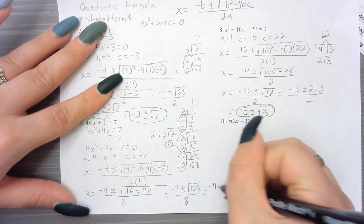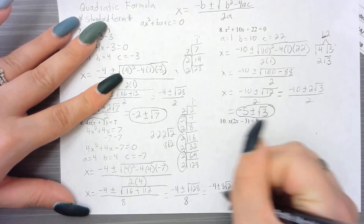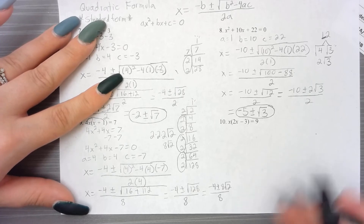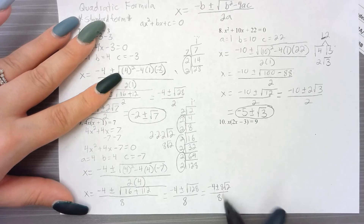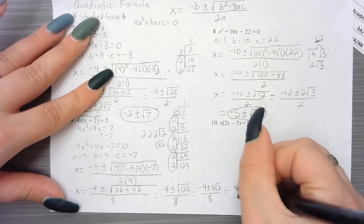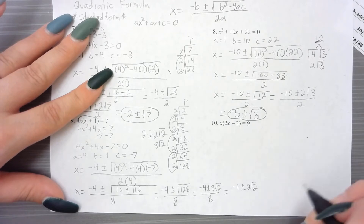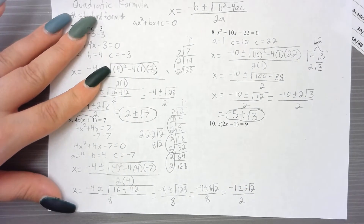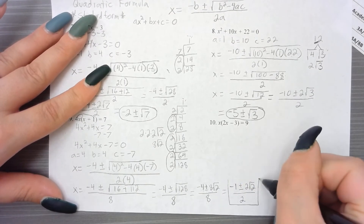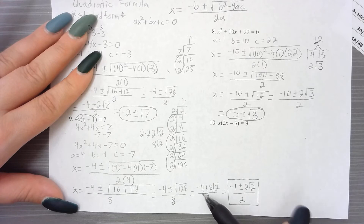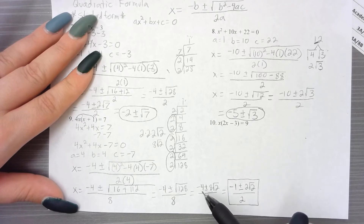So we have negative 4 plus or minus 8 square root 2, divided by 8. All of these are divisible by 4. So we divide: negative 4 divided by 4 is negative 1, 8 divided by 4 is 2, and 8 divided by 4 is 2. That gives us negative 1 plus or minus 2 radical 2, all over 2. We're simplifying the fraction by the greatest common factor of 4 to get something more manageable.